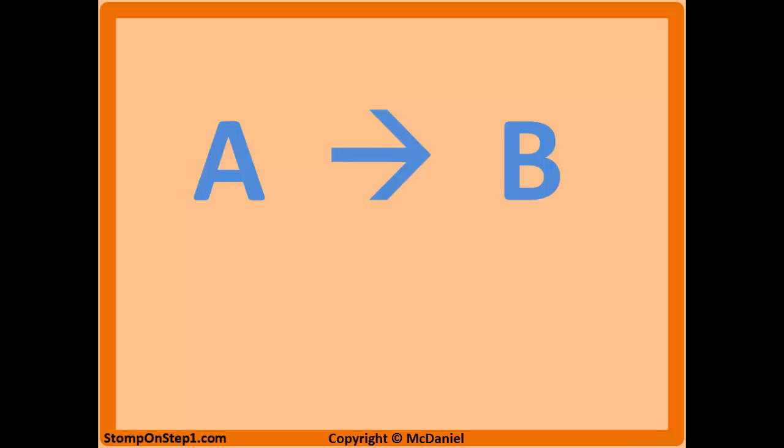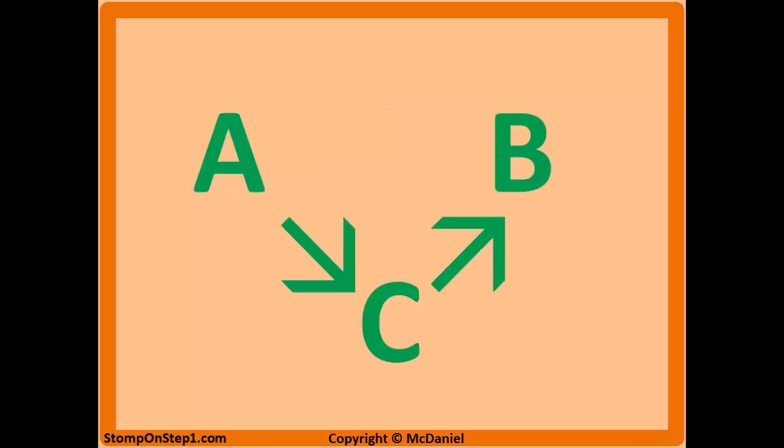When you don't identify that a confounder is present, it looks like risk factor A leads to health outcome B. But here's what's really happening: A happens to be associated with C, and C happens to be associated with B. If you remove C, there is no relationship between A and B.